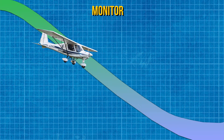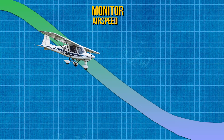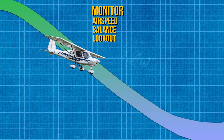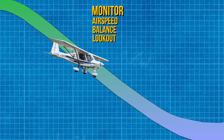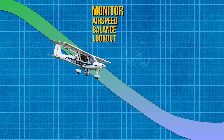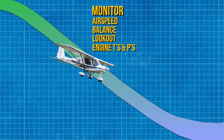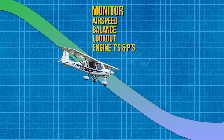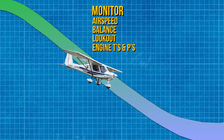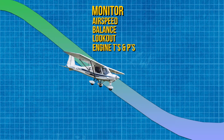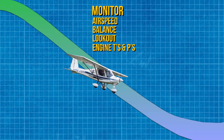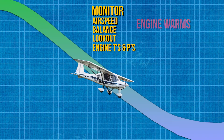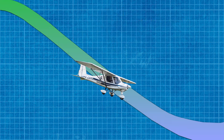Now you are in the descent. You will need to monitor your airspeed, your balance, and make sure to maintain a good lookout — the horizon will be very high up the screen. Make sure to monitor the engine temperatures and pressures as well. Remember, the engine will cool down very rapidly, so we will introduce engine warms. Every few hundred feet we will give the engine a burst of power. This is known as an engine warm, and it keeps the engine warm in the descent.